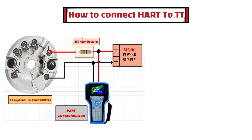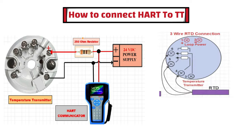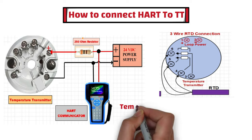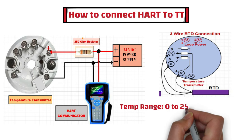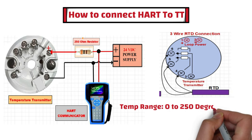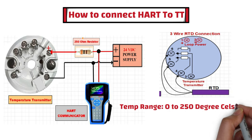In this example, let's assume that a 3-wire Platinum 100 RTD has been connected to the temperature transmitter, and that a 0–250 degree Celsius range needs to be set in the temperature transmitter.